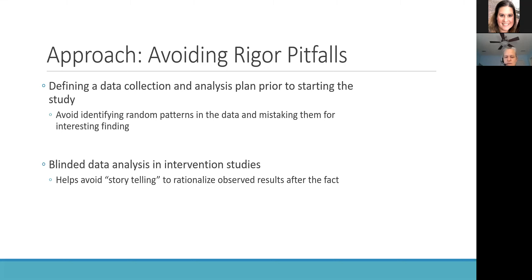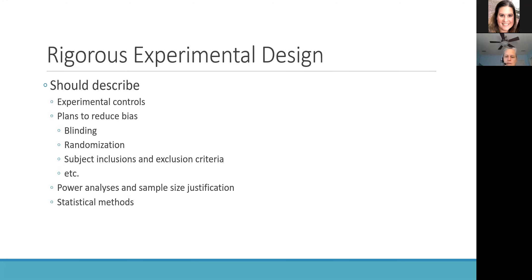If we're doing any sort of randomized controlled trial — whether in animals or people — we can think about things like blinding or randomization to help avoid possible bias. In order to design a rigorous experiment up front, we want to take care in describing all aspects of the study, including describing appropriate experimental controls, how we're going to address bias through things like blinding, randomization, and careful consideration of subject inclusion and exclusion criteria.